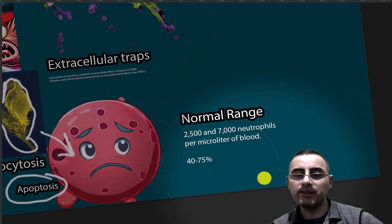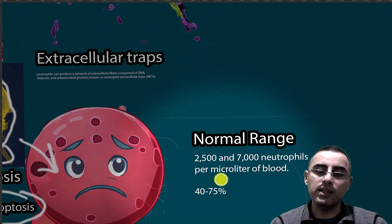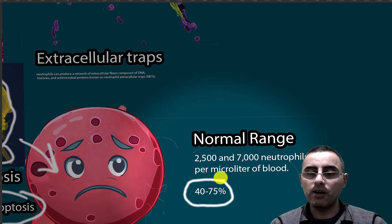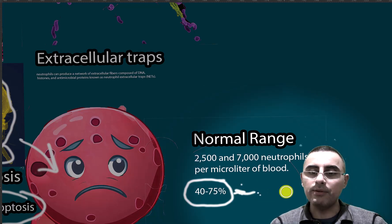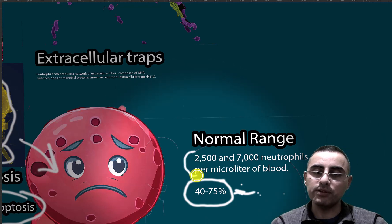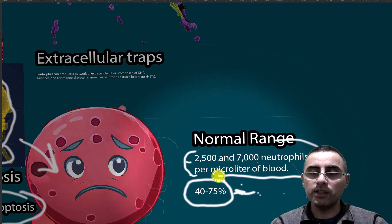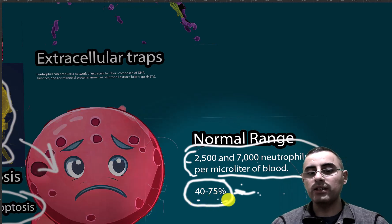Now let's discuss normal values. Neutrophils make up the majority of white blood cells. In normal cases, it should be 40 to 75 percent of white blood cells — this is the relative neutrophil count. The absolute neutrophil count, measured directly per microliter, should range from 2,500 to 7,000 neutrophils per microliter of blood.